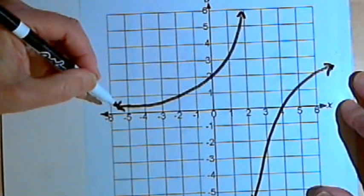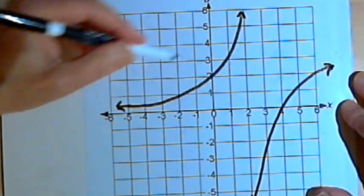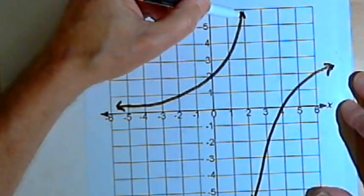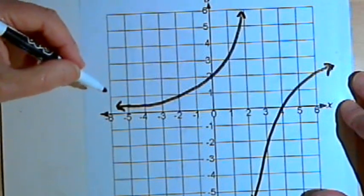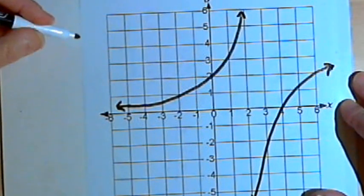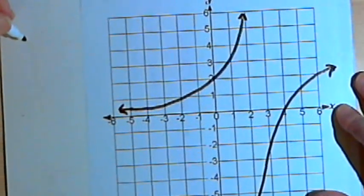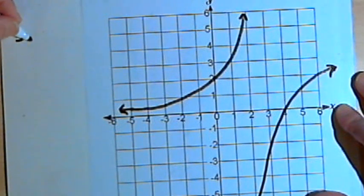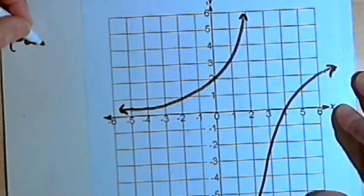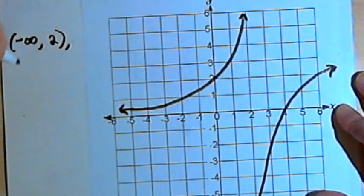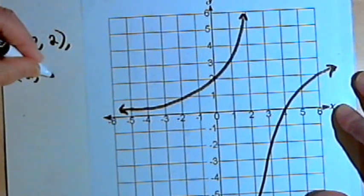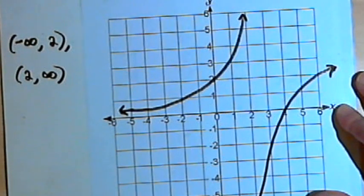So obviously this is a discontinuous function because I had to pick my marker up when I got to 2. The intervals that I can use to show where it's continuous would be from where it began, negative infinity, that's with a round parenthesis, up to but not including positive 2, and then it begins again after 2 and goes on to positive infinity.